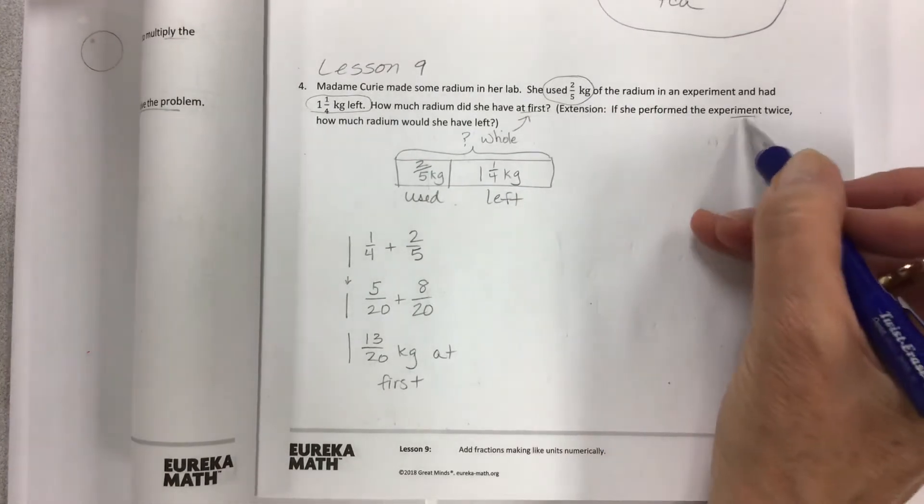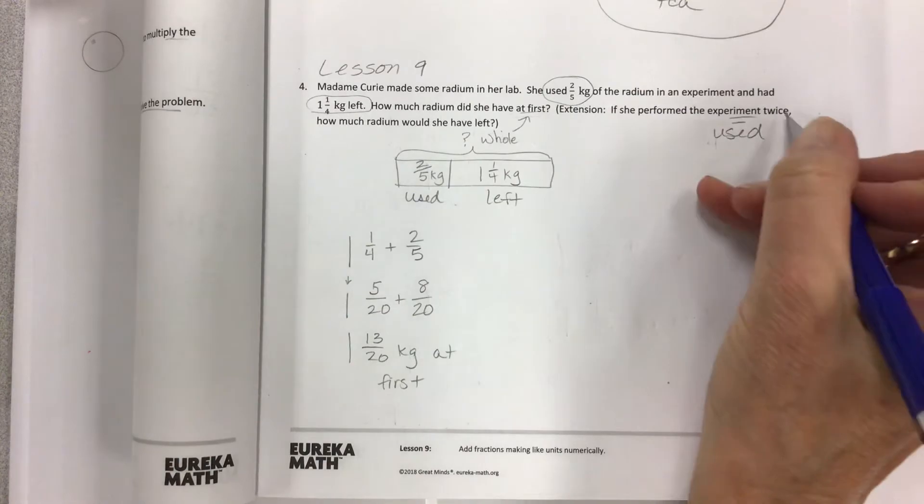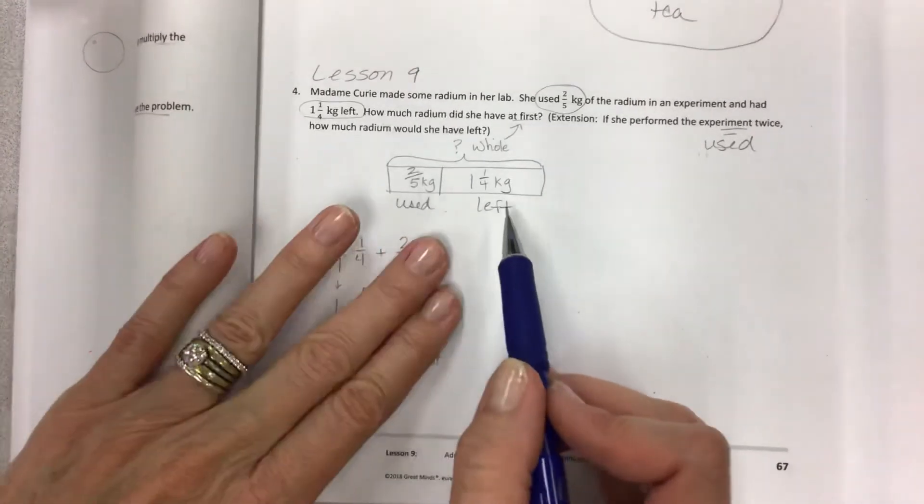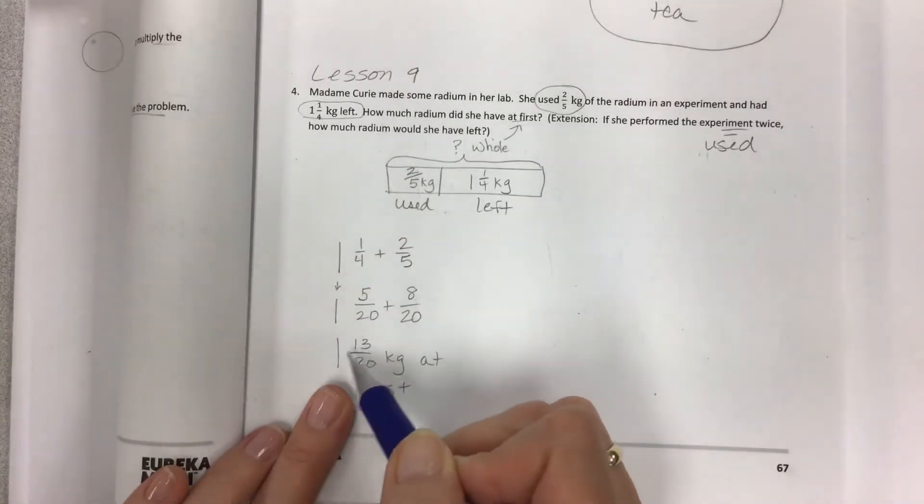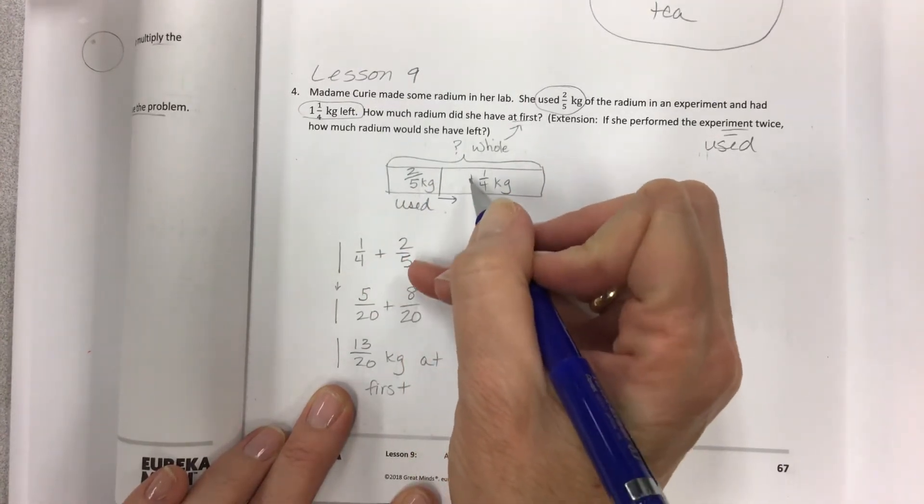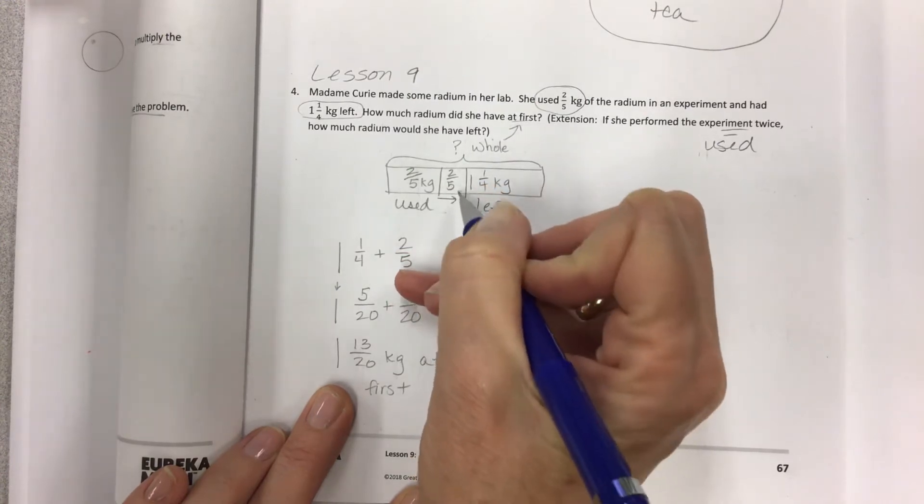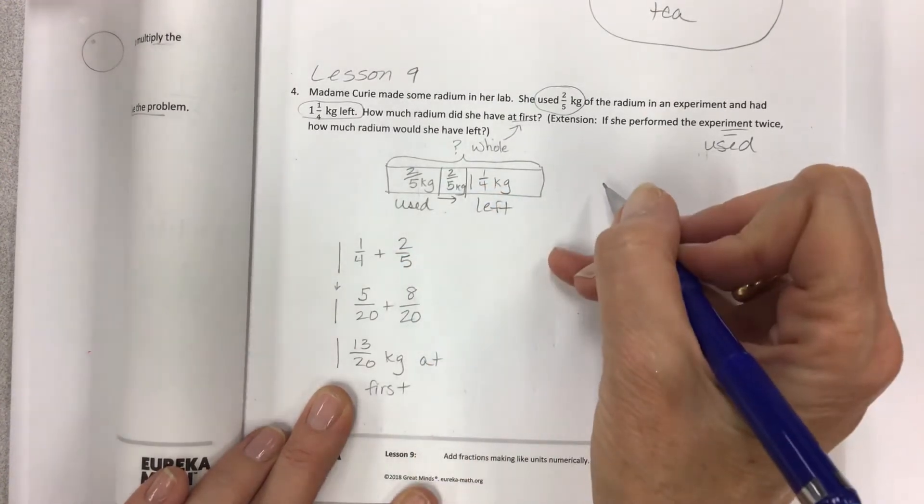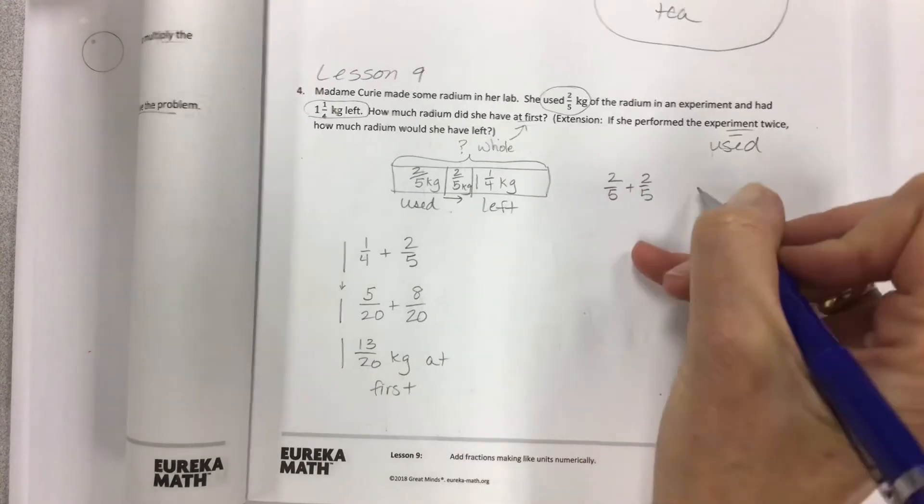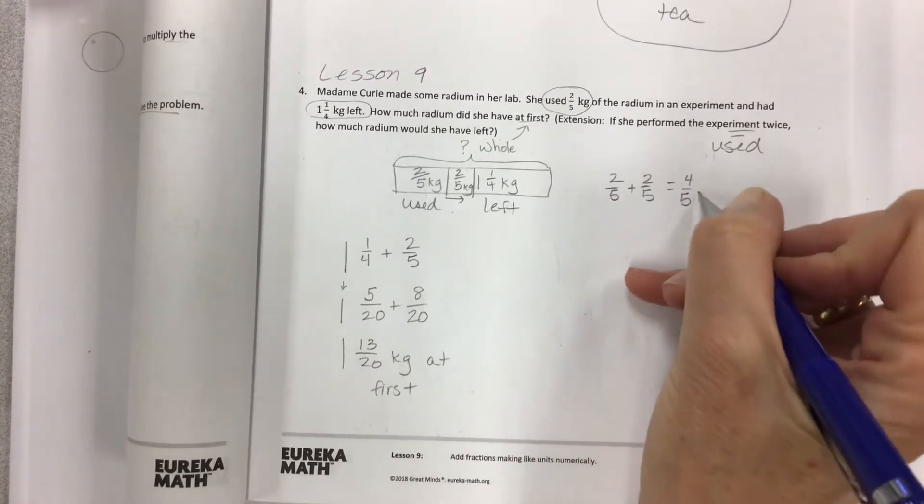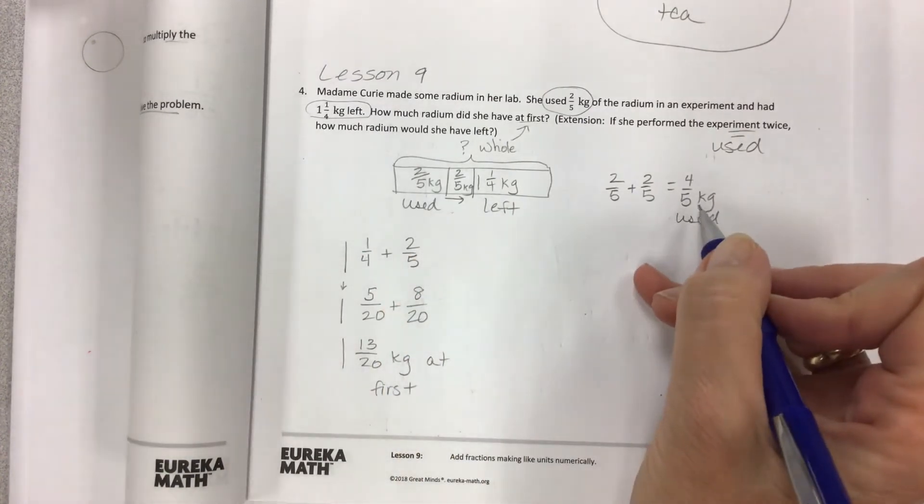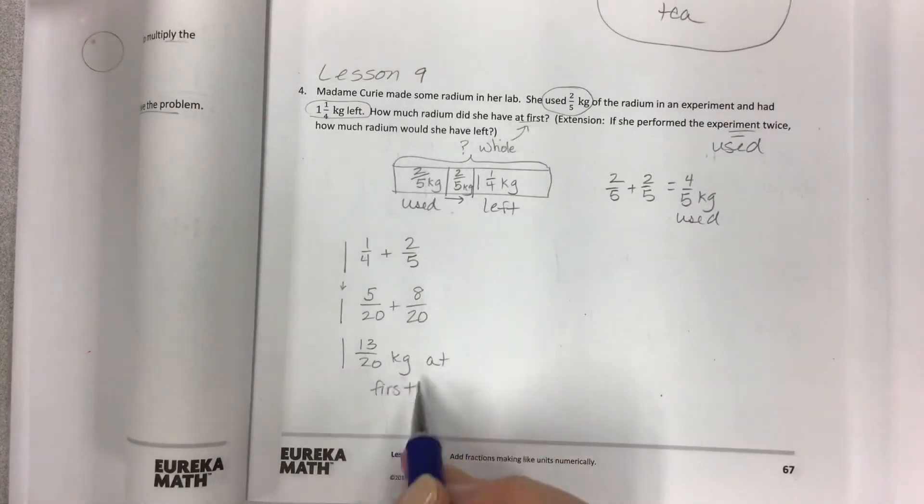So it's not going to impact the whole, it's going to impact what we have left. So if you have this, but this changes, it's going to impact what we have left. So it's going to creep into this territory. So I'd have two-fifths used again, and so the two-fifths, let's just do this part over here. This would be four-fifths kilogram used instead of two-fifths.